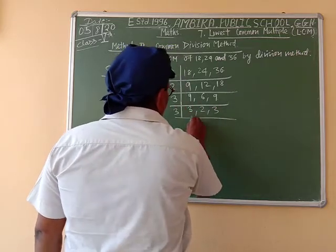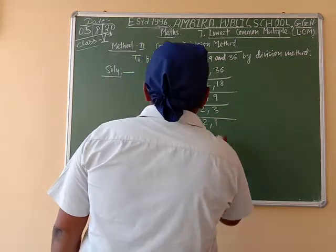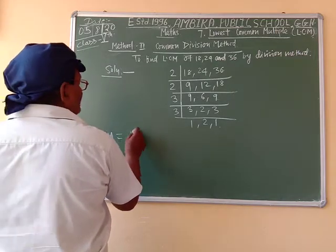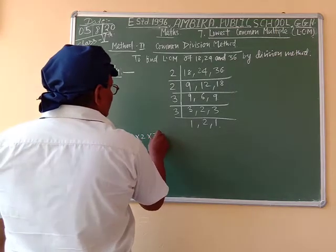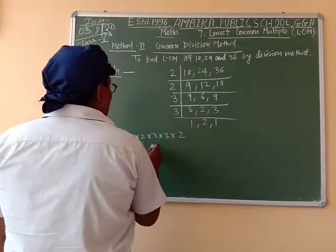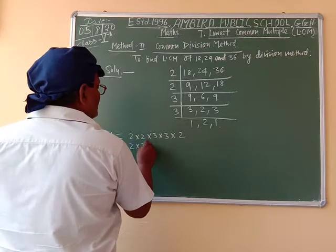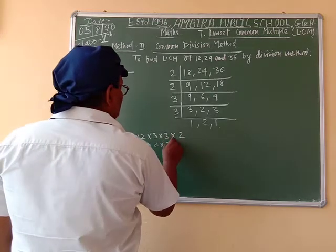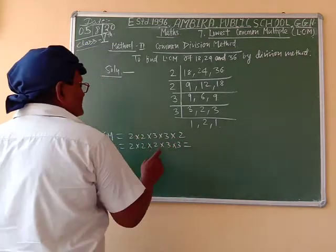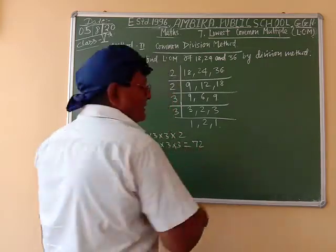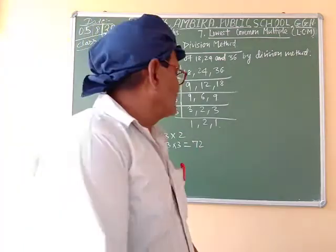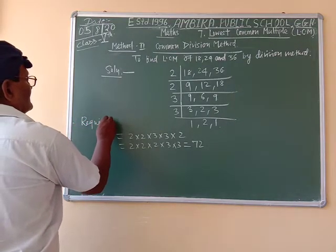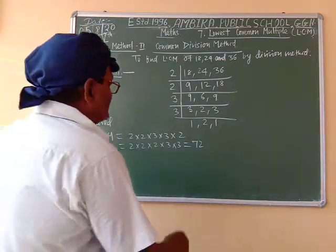Let's move on. We divide: 1, 2, 3. Dividing directly, you divide by 2 and take 2. The result is equal to 72. So the required LCM is equal to 72.